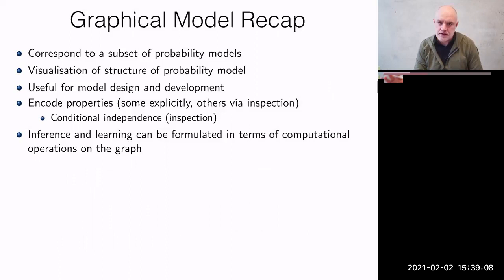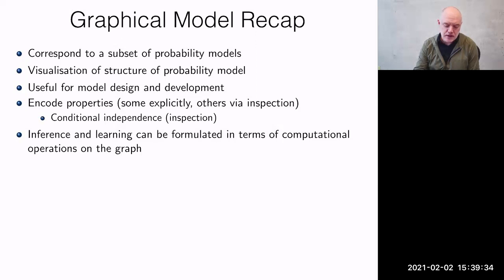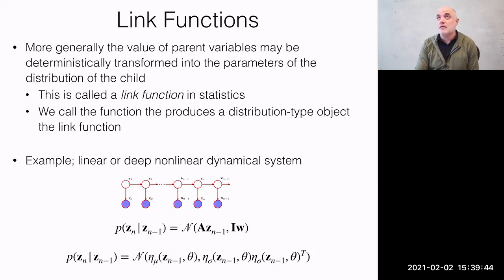Just a couple of things to say about graphical models to recapitulate. Graphical models correspond to a subset of probability models. They allow you to visualize the structure of a probability model. They're useful for model design and development. They encode certain properties — sometimes explicitly, sometimes via inspection. In particular, conditional independence is something you get from inspection. You can frame inference and learning in terms of computational operations on the graph.